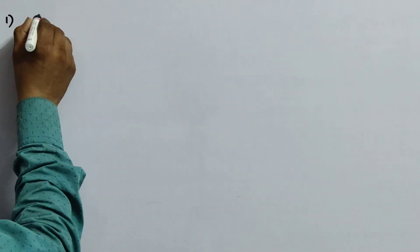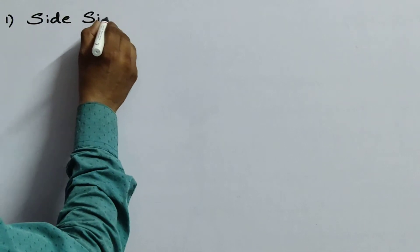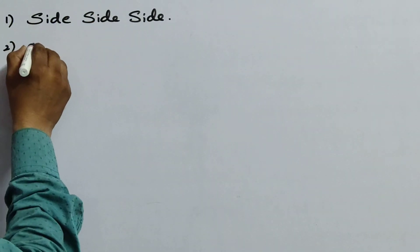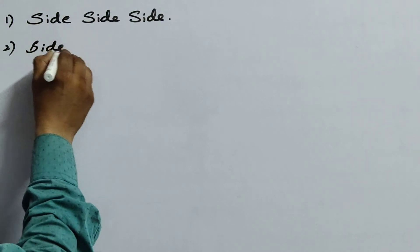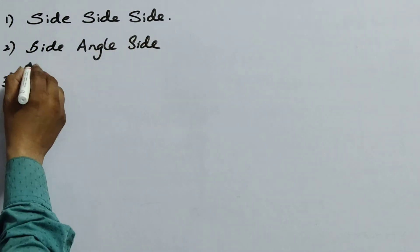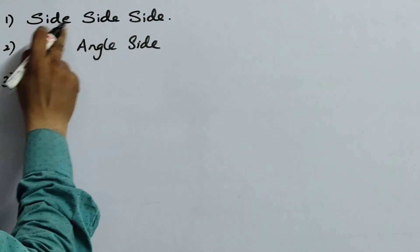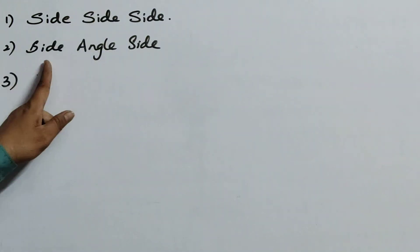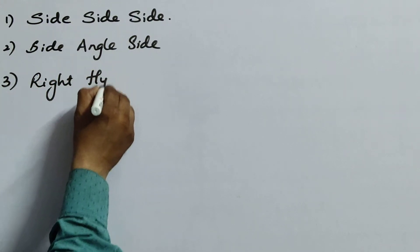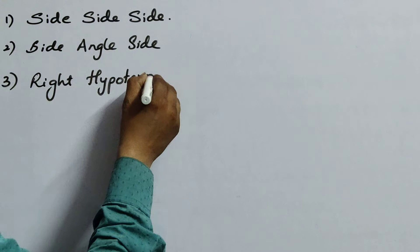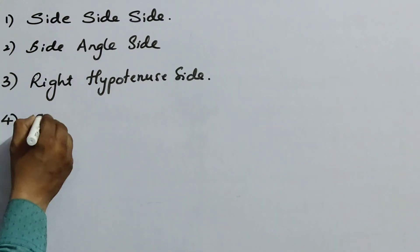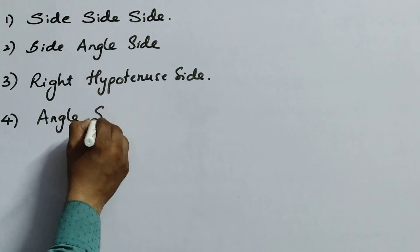The four types of properties are: the first one is Side-Side-Side, next is Side-Angle-Side, next is Angle-Side-Angle, and the last one is Right-Hypotenuse-Side. In shortcut they are written as SSS, SAS, ASA, and RHS. First we will learn the first three, and at last we will go for Right-Hypotenuse-Side.